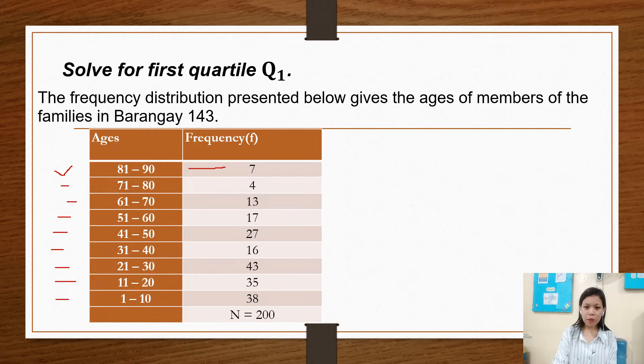So in 81 to 90 ages, there are 7. In 71 to 80, there are 4. In 61 to 70, there are 13. 51 to 60, 17. 41 to 50, there are 27. And 31 to 40, there are 16. 21 to 30, there are 43. 11 to 20, there are 35. And 1 to 10, there are 38 people having the age of 1 to 10, and a total of 200 members.